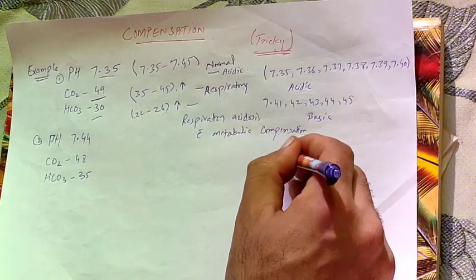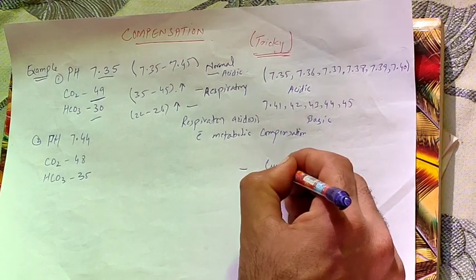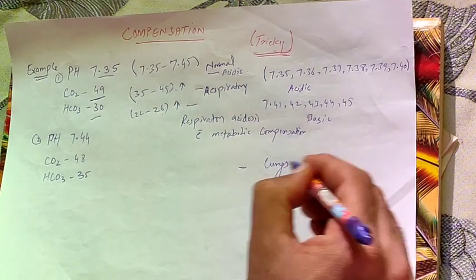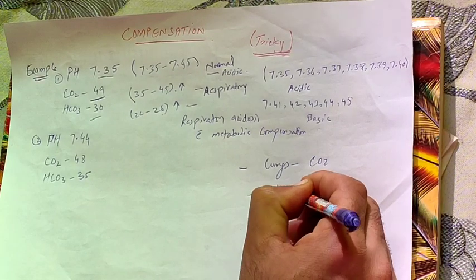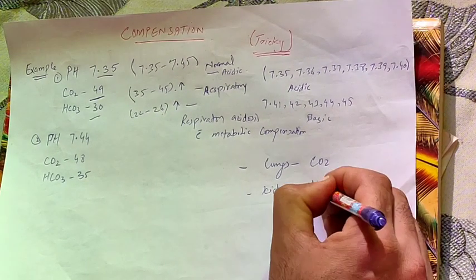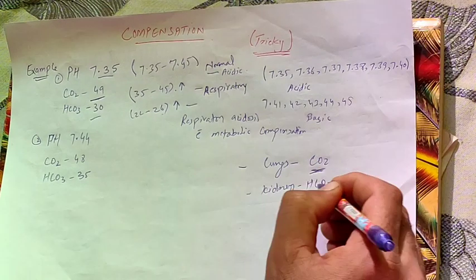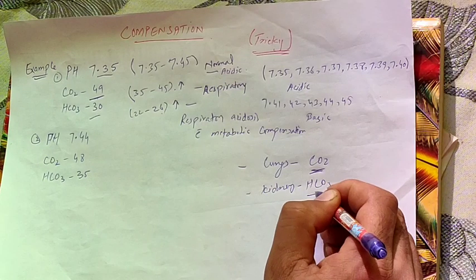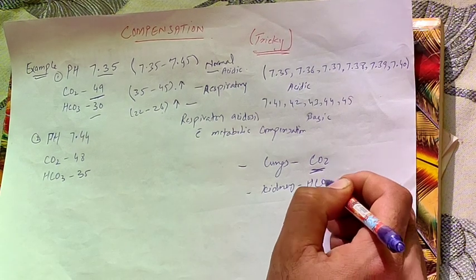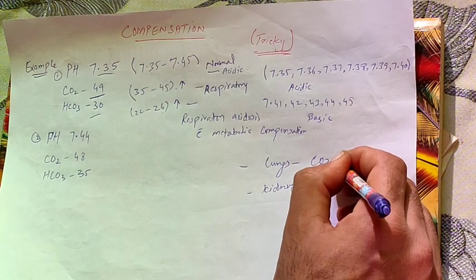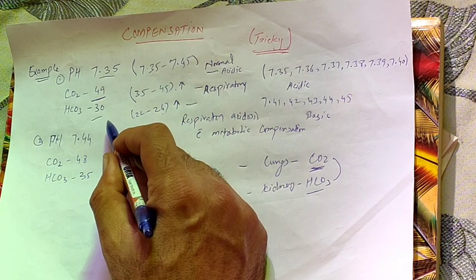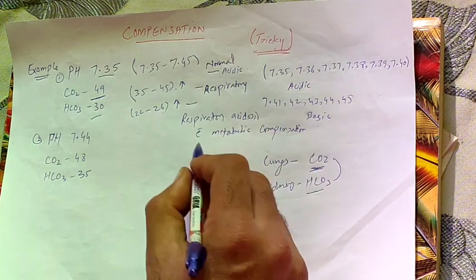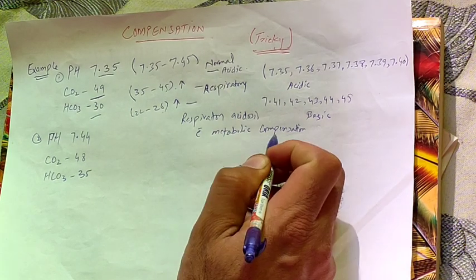Remember: the lungs work on CO2 and the kidneys work on HCO3. If there is an increase in CO2 in the blood, the kidneys compensate by retaining more bicarbonate to offset the acidity. So when pCO2 is high and HCO3 is also high, the kidneys have retained more bicarbonate to compensate — this is respiratory acidosis with metabolic compensation.